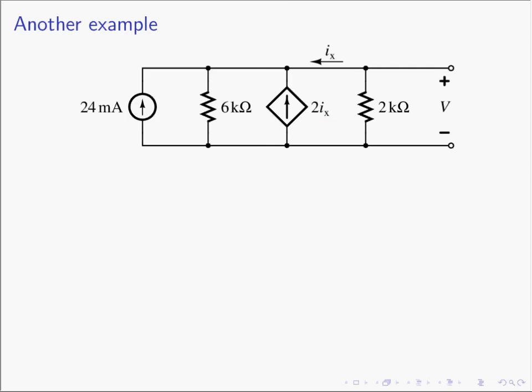Let's do another example. Here we have a circuit where all circuit elements are again in parallel. A great technique: get your colored pencils out and draw on the circuit. Draw along each wire with one color until you hit a circuit element — everything along the orange is the same node. Take a different color and do the same for the other wires. If a circuit element has the same two colors on both sides, it's in parallel with the others. Here all elements have orange on one side and purple on the other, so they must all be in parallel.